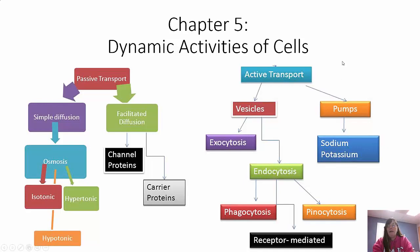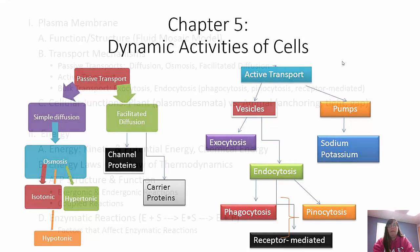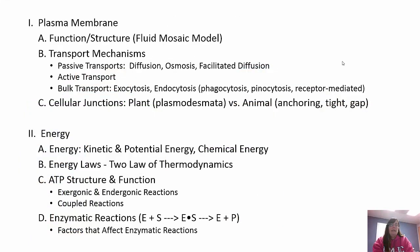Today we are talking about Chapter 5, which is the Dynamic Activities of Cells. We're going to be talking about transport, the plasma membrane, junctions, then we're going to move into energy, how we get at that energy, and enzymes.